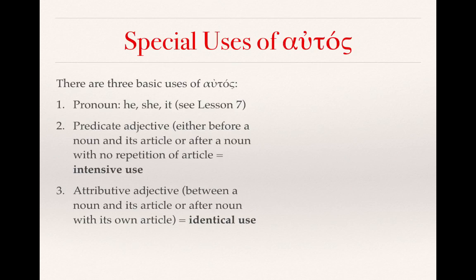The final new concept in this lesson is the special use of autos. There are three basic uses of autos. First, it can function like a pronoun — he, she, or it — which we learned about in Lesson 7. Second, it can function as a predicate adjective, either before a noun with its article or after a noun with no repetition of the article. This is known as the intensive use of autos.